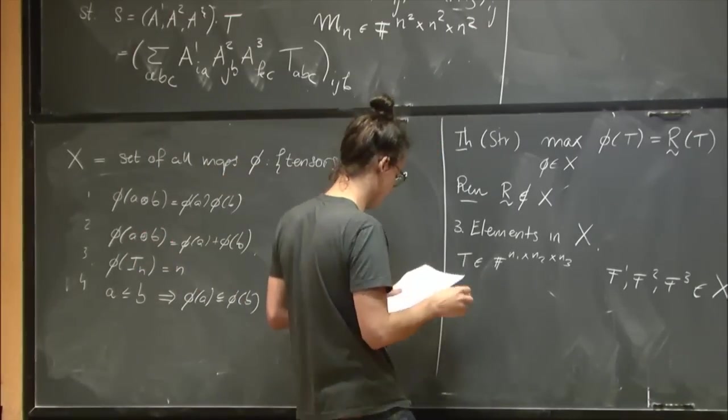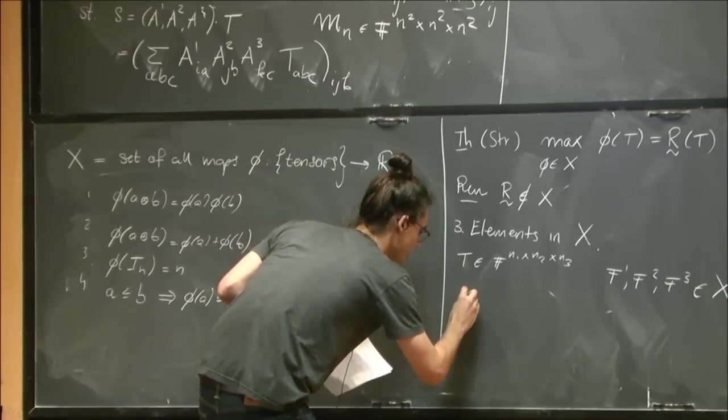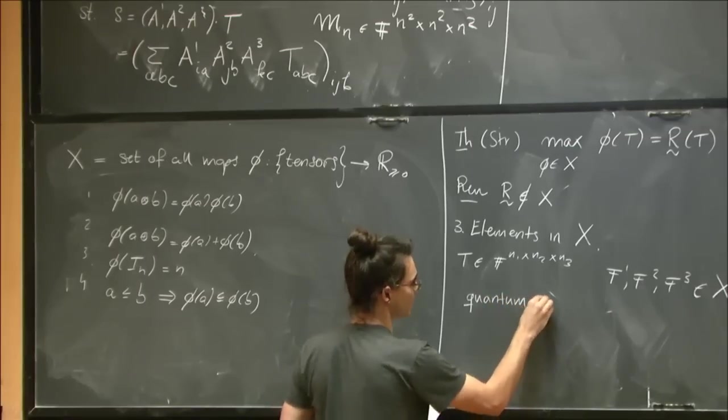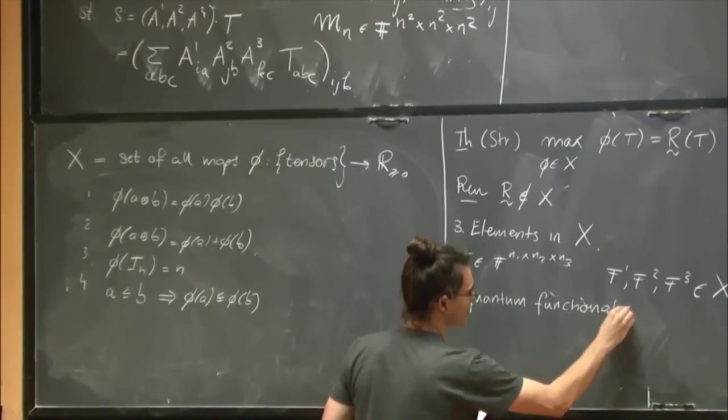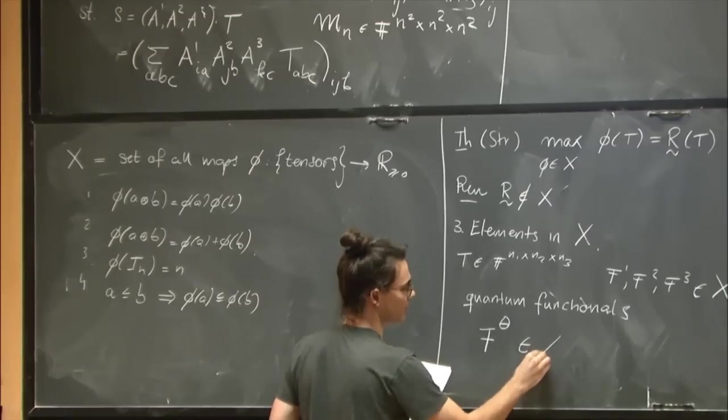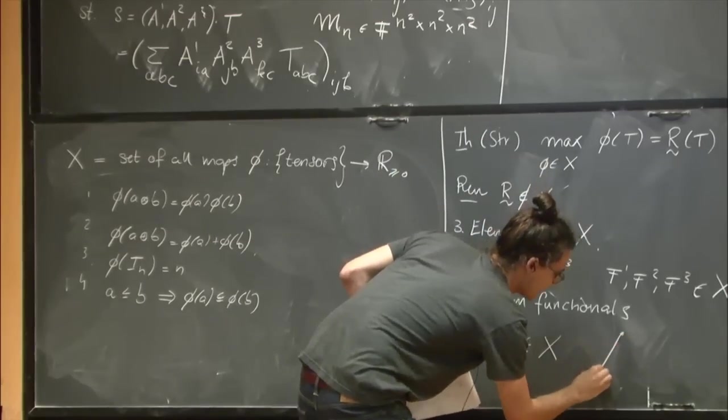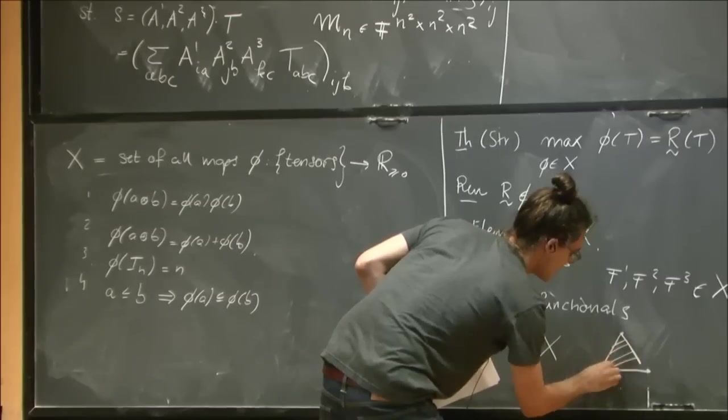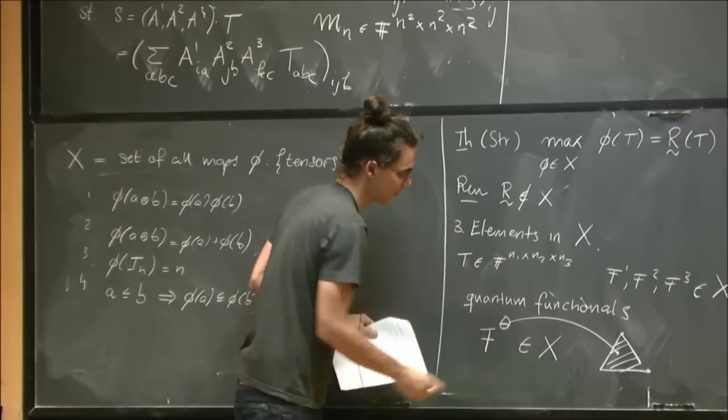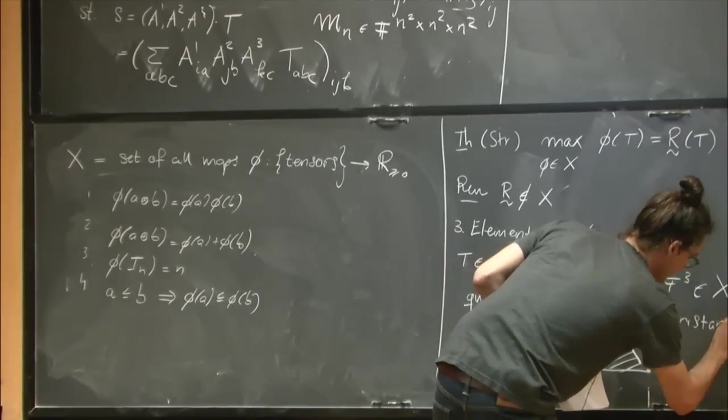And our results. So this is the first. So these are flattenings. Our result is, it's called the quantum functionals. It's a family of functions, F_theta. And they're all in X. And theta is a parameter, which lives in a simplex. And so it's like an infinite family. And there are different functions, or functions in this asymptotic spectrum. So this is joint work with Cristando and Frana.